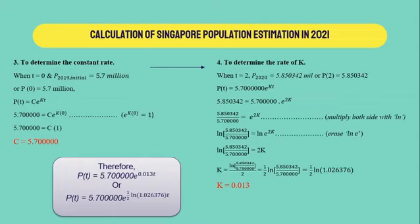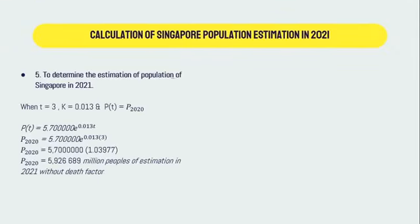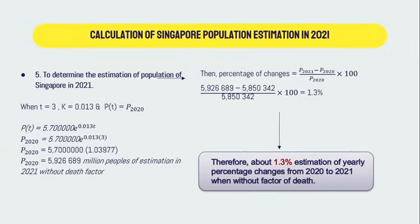Next, we solve the equation to get the value for the rate k. After finding the values of c and k, we can start the estimation of Singapore's population in year 2021. In step 5, we plug in the values of k and t to find the estimated population in 2021 without the death factor, giving us 5,926,689 people. We can also calculate the percentage of population change between 2020 and 2021 — approximately 1.3% yearly percentage change without the death factor.